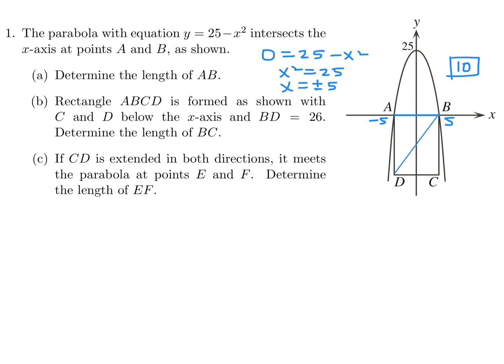This is just Pythagoras. BD squared is equal to DC squared plus BC squared. BD, they gave me, is 26. And DC is going to be 10, because it's the same as AB — it's a rectangle. So you just have to solve for BC, and when you do, BC is 24.